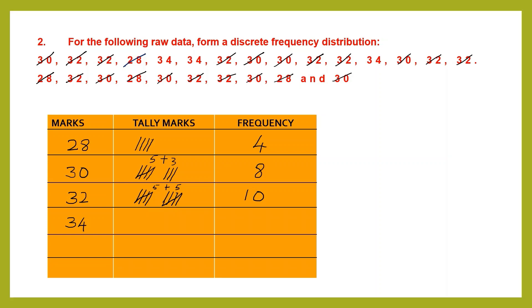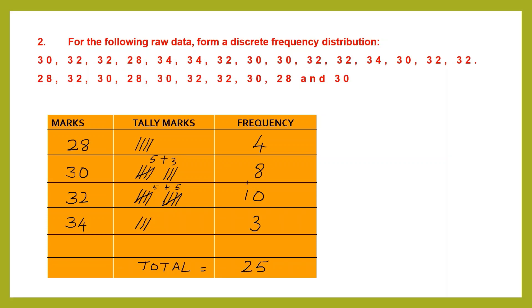For 34, we have three occurrences, so the frequency is 3. Now let's find the total: 4 plus 8 is 12, 12 plus 10 is 22 — wait, let me add: 4 plus 8 is 12, 12 plus 3 is 15, then carry: total is 25. Let's verify by counting all numbers: 1 through 25. Our total is correct — we have 25 numbers and have not missed out anything.